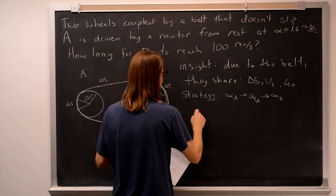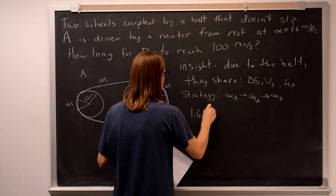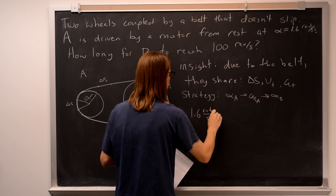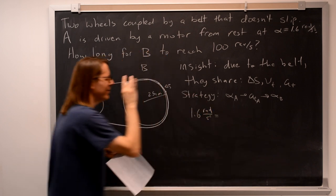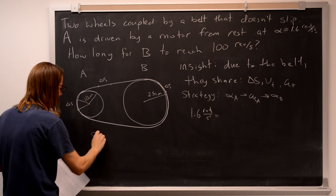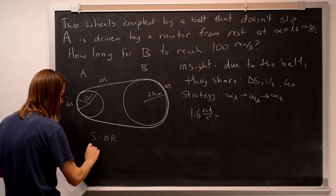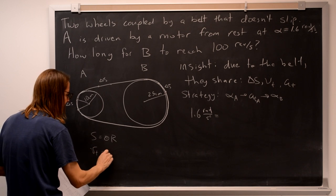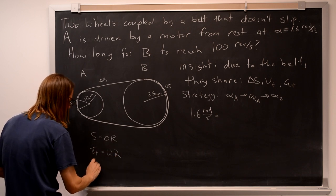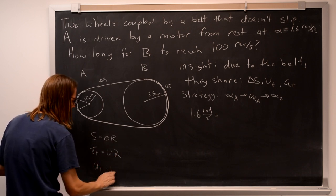Let's say alpha of A, 1.6 radians per second squared. How did that relationship go? I know that S equals theta R, so I take a derivative, and I know that Vt is omega R. And I take a derivative, and I know that At is alpha R.